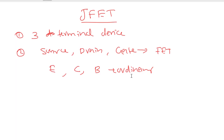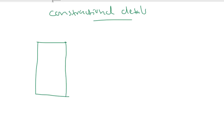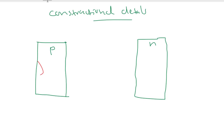So JFET is a three terminal semiconductor device where current conduction is taking place by only one carrier, that is electron or holes. Now let us discuss about the constructional details of a JFET. First, you have to consider a silicon bar. That bar can be P-type or it can be N-type. I considered a P-type silicon bar and then an N-type silicon bar. We have to form P-N junctions at the sides. This bar forms the conducting channel for the charge carriers.